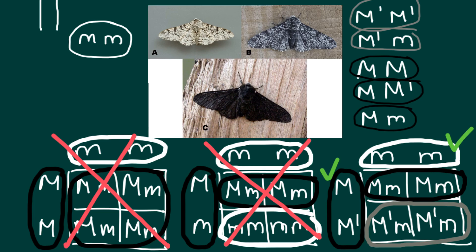I hope you're now able to solve analogous problems with three alleles easily. You don't actually have to build all three Punnett squares — for most of you it was probably obvious which genotypes were required. I showed all the steps so you could see the full method, but it should take you much less time than my explanation. Thank you for your attention. Please subscribe for new videos posted almost every day, thumbs up if you liked this video, write your comments and questions, and see you in the next video. Goodbye!